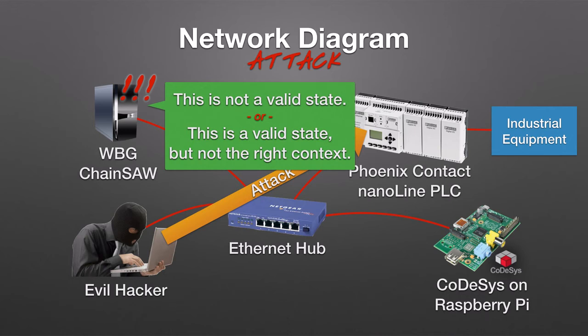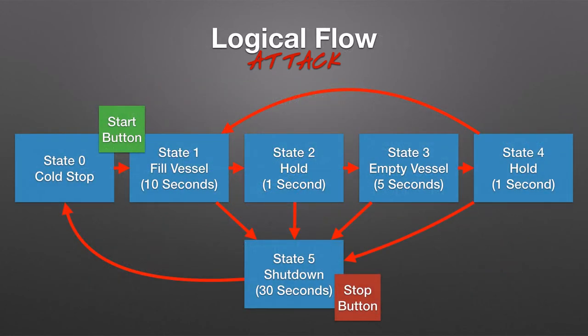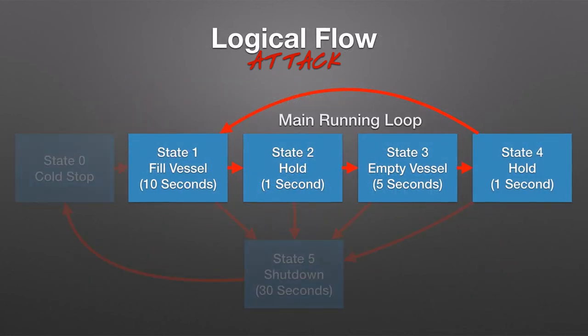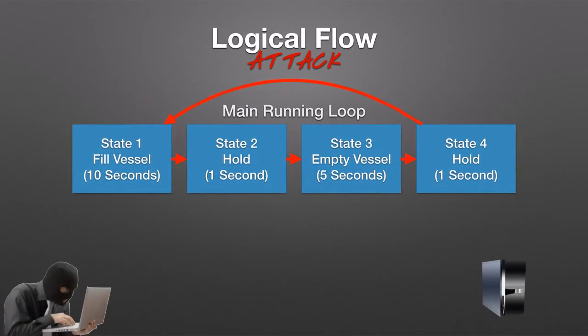This is all well and good, but how exactly did the detection occur, and what triggered it? To understand that, let's look back at the logical flow of the system. Specifically, we're going to focus on the main running loop and ignore the rest for the moment.